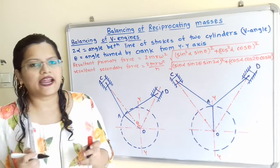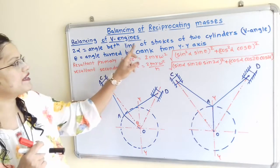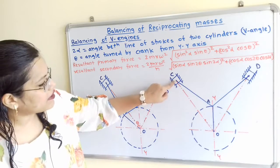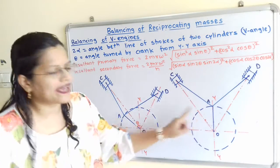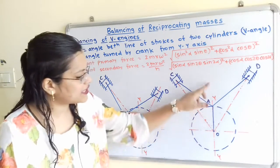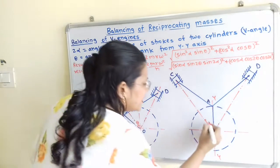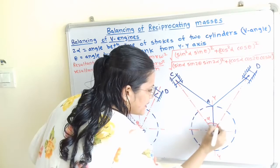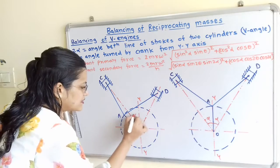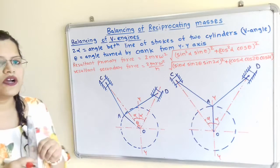Now we will understand the angle alpha. The angle 2 alpha is the total angle between the line of strokes of the two cylinders, so angle COD is known as 2 alpha. From the vertical line YY, one half of this angle is alpha and the other half is also alpha, making the total angle 2 alpha.